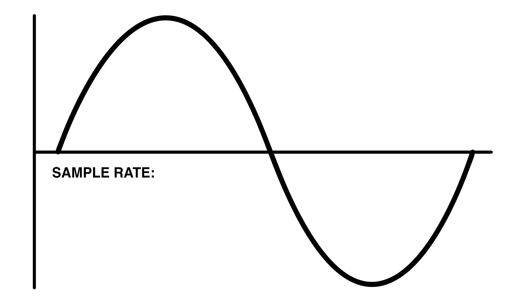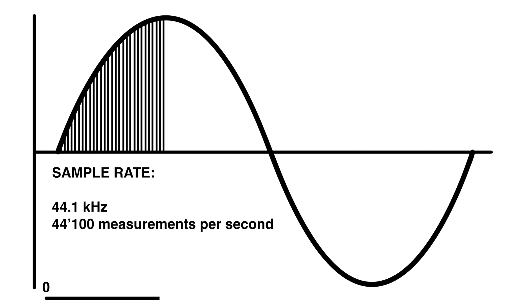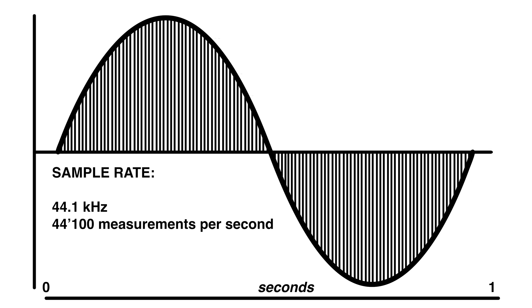The interval at which the system measures the wave is described as the sample rate. So the sample rate is the amount of measurements the system does per second. With a sample rate of 44.1 kilohertz you have 44,100 measurements per second, and with 48 kilohertz you have 48,000 measurements per second.